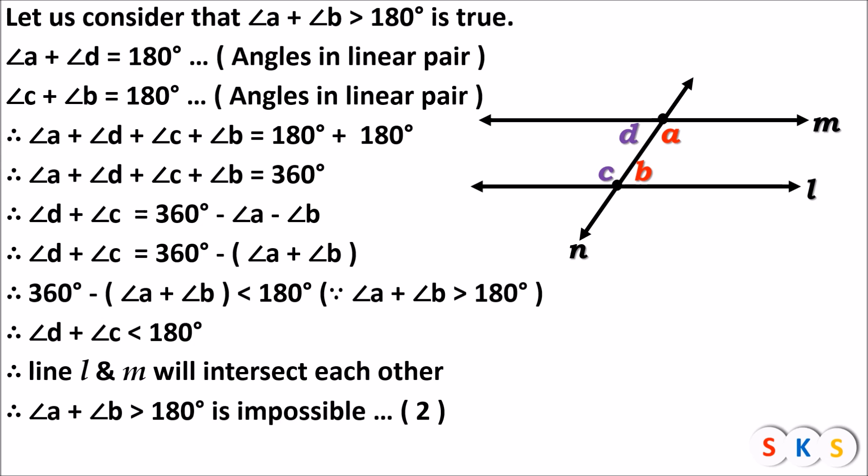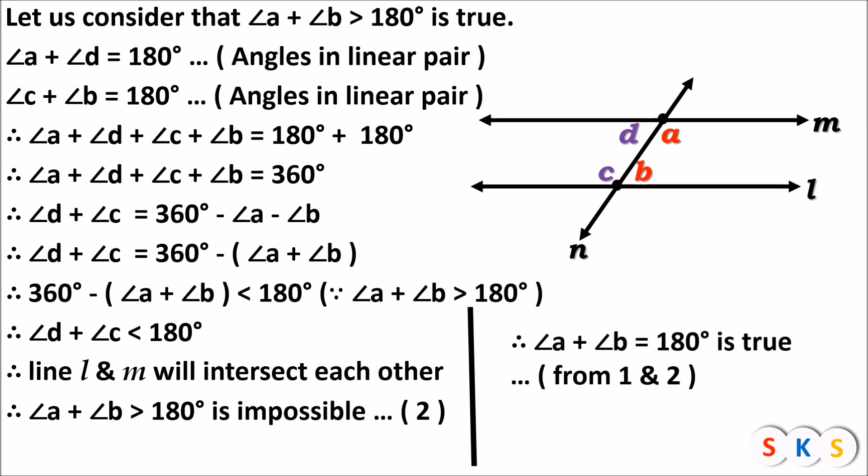Equation number one said angle A plus angle B less than 180 degrees is impossible, and equation number two says angle A plus angle B greater than 180 degrees is impossible. Therefore angle A plus angle B equals 180 degrees is true, from equations one and two. I have proved that the sum of interior angles formed on one side of a transversal is supplementary. Similarly, angle C plus angle D equals 180 degrees can be proved.